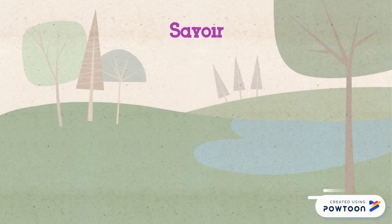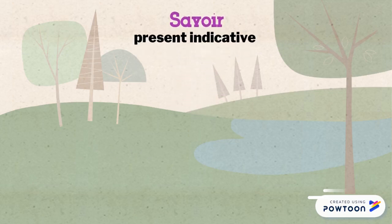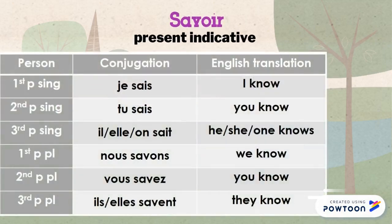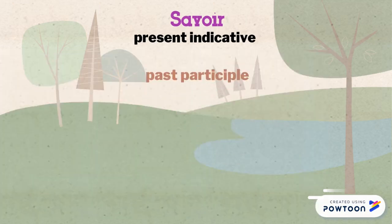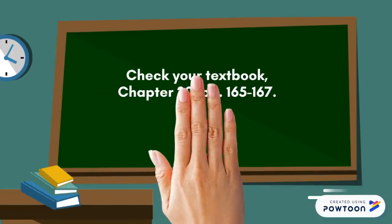The conjugation of savoir in the present indicative is: je sais, tu sais, il/elle/on sait, nous savons, vous savez, ils/elles savent. The past participle of savoir is su. Au revoir!